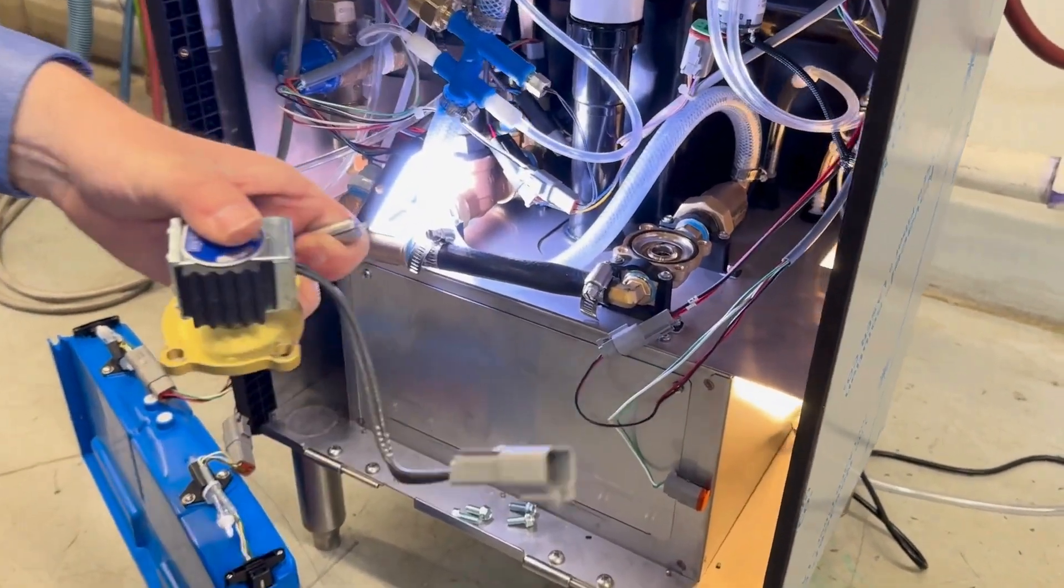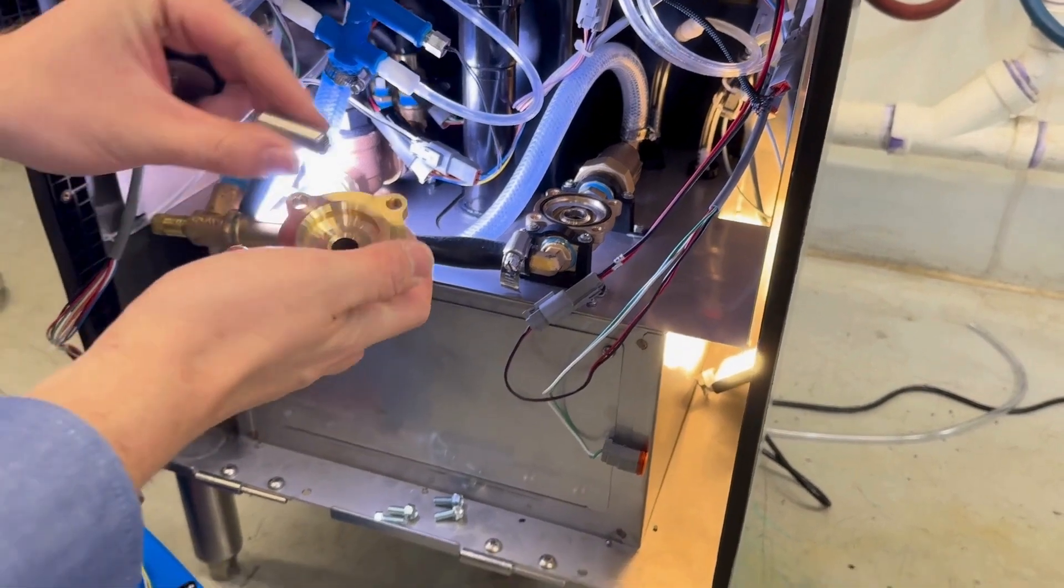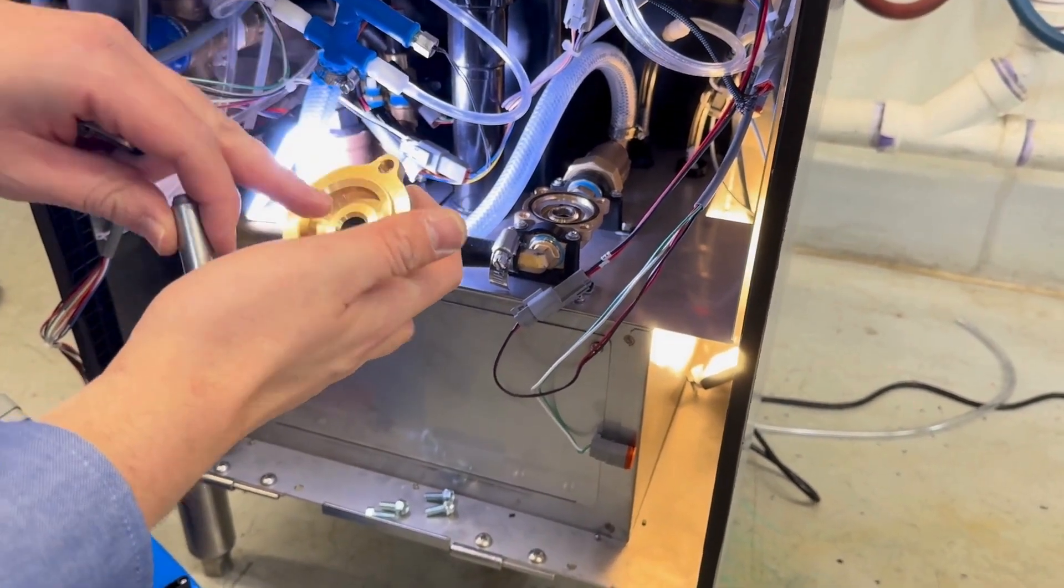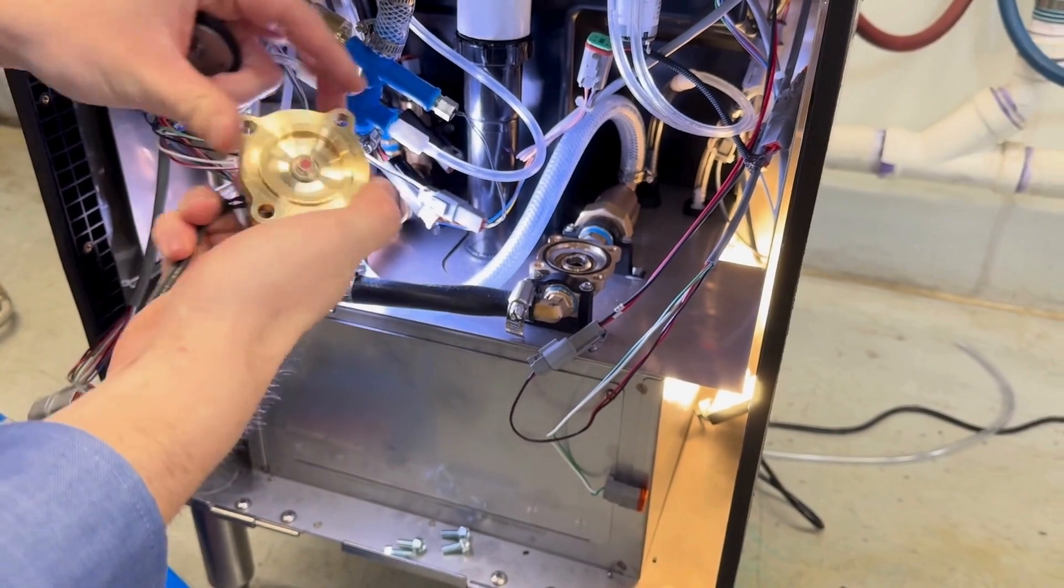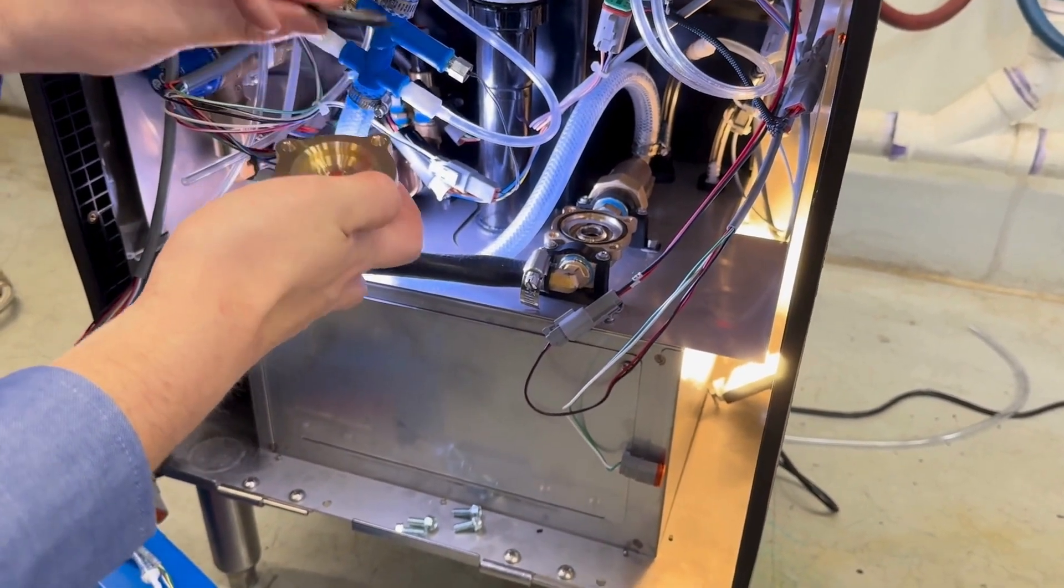To reinstall it, I'll put the plunger into the valve head, making sure the spring is pointing down as I place it in. This orange pad here should come into contact with the diaphragm.